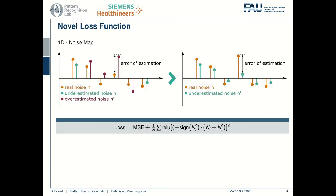With the design of a novel loss function which punishes noise over-estimation more heavily than under-estimation, we could ensure that almost no details of the image are removed by the neural network.